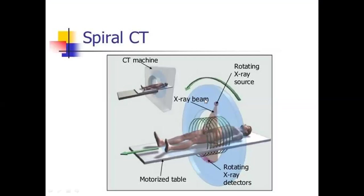Why is this spiral CT scan used? It can achieve improved image resolution for a given radiation dose compared to individual slice acquisition. In the spiral CT scan, the X-ray and the detector are in your helical path. After the helical path rotates, the image becomes a high resolution image, and the X-ray dose can also be reduced.